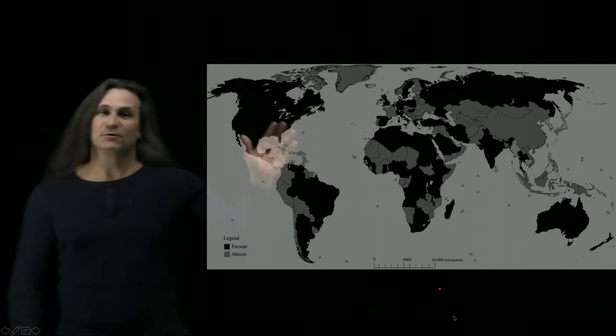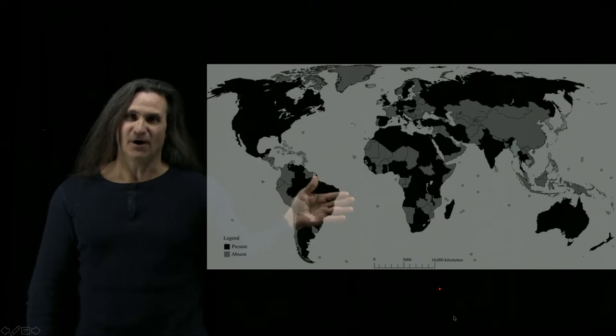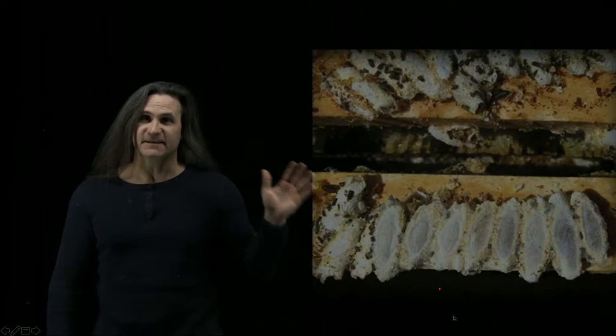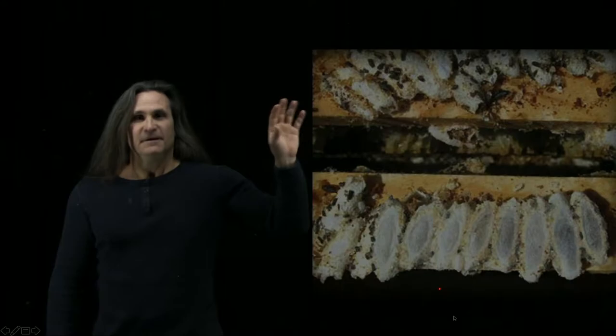Now the wax moth has pretty successful distribution throughout the world because they prey upon the wax of bee colonies. So what they do is they move into bee colonies that are not occupied by bees - empty cavities or empty equipment - because they like to eat the leftover honey and the wax.